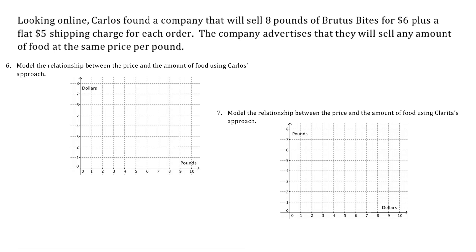As we continue to question 6 and 7 we see that the scenario changes. Online Carlos found a company that will sell 8 pounds of Brutus Bites for $6 plus a flat $5 shipping charge for each order. So that $5 shipping charge for each order is what makes this scenario a little bit more complicated, because each of the linear functions you're going to develop, one using Carlos's approach in problem 6 and the other using Clarita's approach in problem 7, will have y-intercepts.